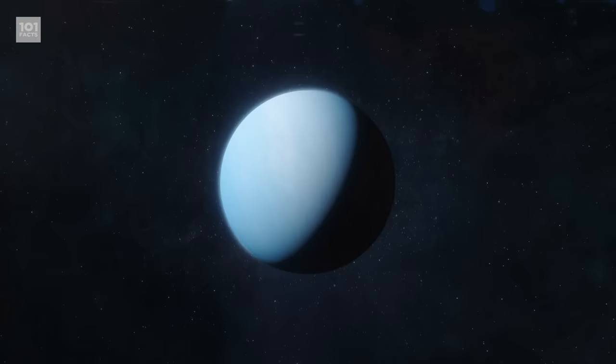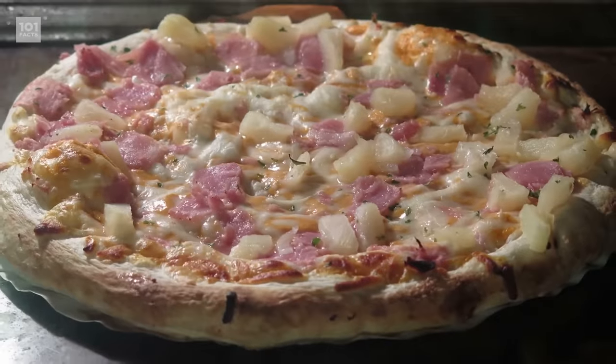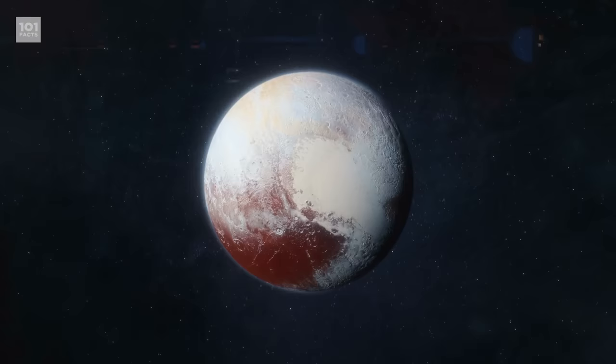Honestly, Neptune hasn't been explored that much because it's so far away, so let's move on to the most controversial object in the solar system. Pluto. Pluto lives in the Kuiper Belt, which is a donut-shaped area that lies beyond Neptune and is home to millions of icy objects.